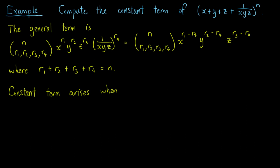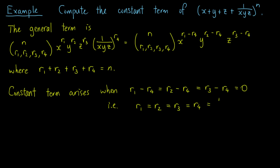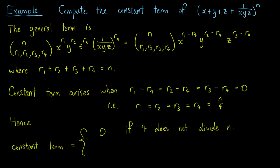So we have a constant term when the powers of all the variables are zero. In other words, R1 minus R4 equals R2 minus R4 equals R3 minus R4 equals 0. This means R1 equals R2 equals R3 equals R4, and they are all equal to N over 4, since their sum equals N. Hence, the constant term is zero if 4 does not divide N, and is equal to the number of partitions of N into subsets of sizes N/4 if 4 divides N.